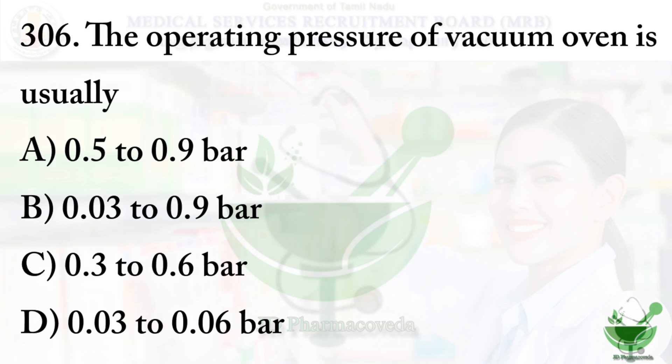Question number 306: The operative pressure of a vacuum oven is usually? Option A: 0.5 to 0.9 bar, Option B: 0.03 to 0.9 bar, Option C: 0.3 to 0.6 bar, Option D: 0.03 to 0.06 bar. The correct answer is Option D, 0.03 to 0.06 bar. Bar is the unit of pressure.